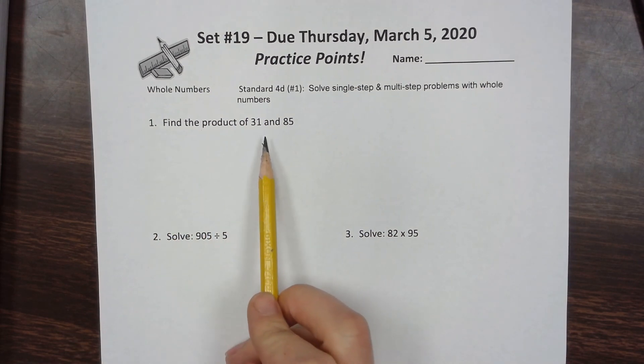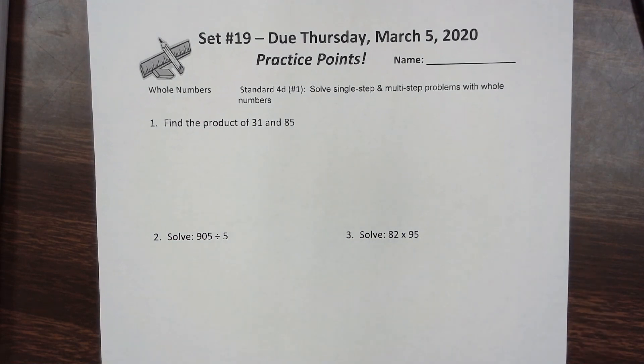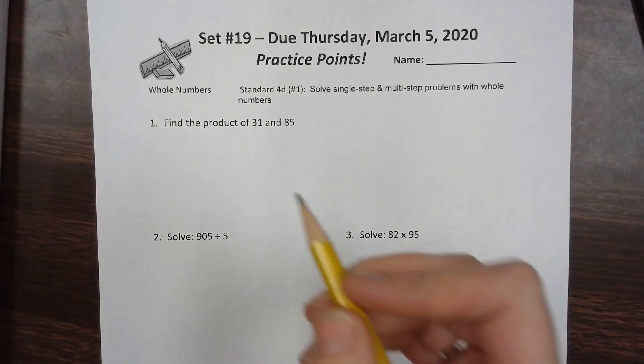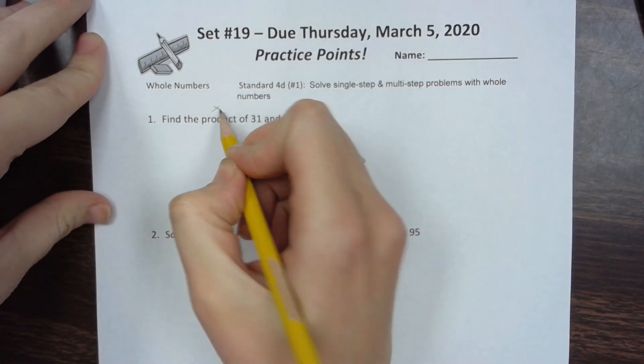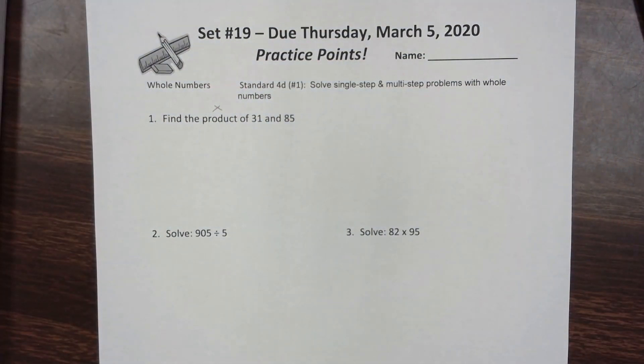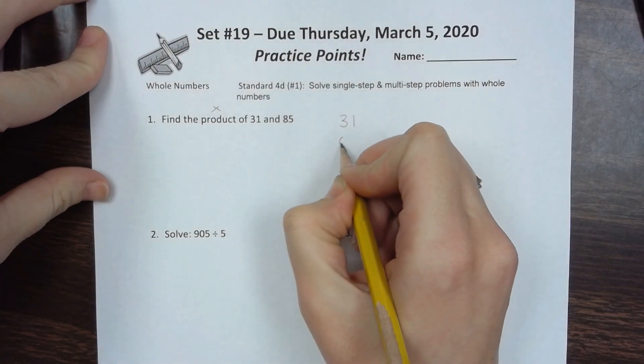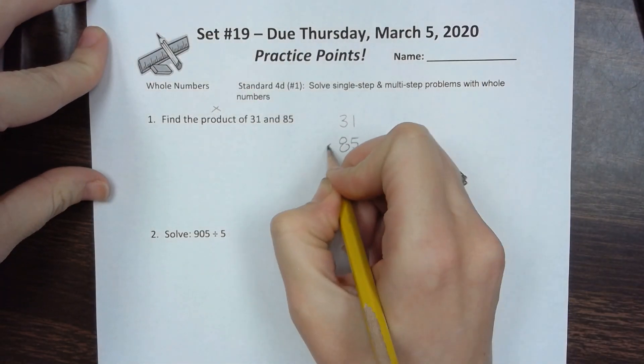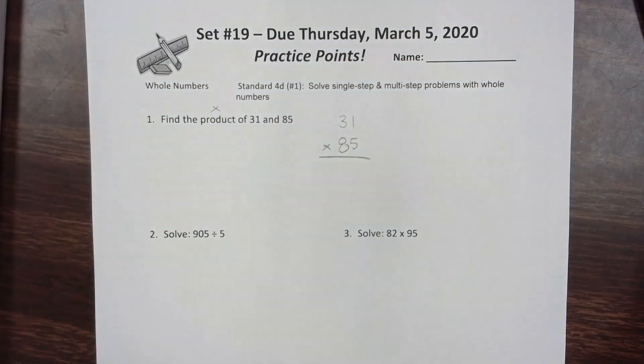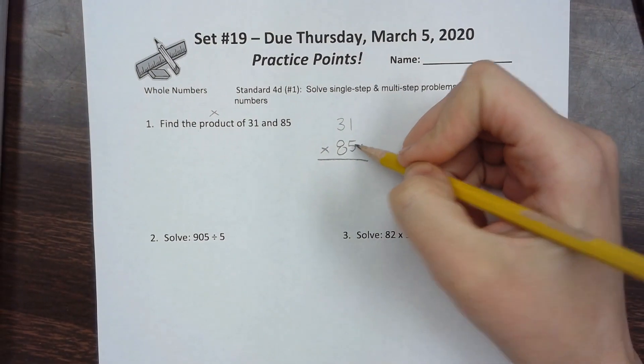The first question says find the product of 31 and 85. Remember, product always means the answer to a multiplication problem. So we're going to multiply these two numbers together by stacking them.